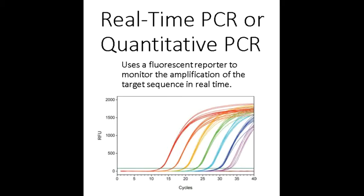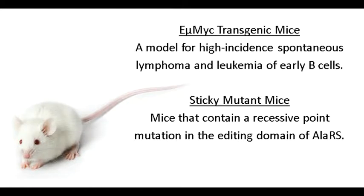In this experiment, we will use real-time PCR, or quantitative PCR, to genotype transgenic mutant mice. Transgenic mice will express the EMU-MIC transgene, which makes mice vulnerable to lymphomas. The mutant mice express the sticky mutation, a recessive point mutation in the editing domain of alanyl tRNA synthetase.